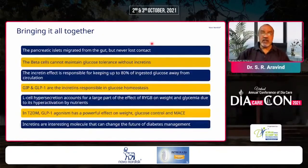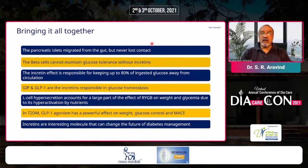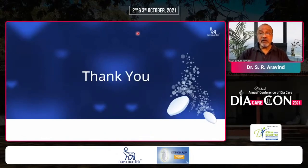In summary: from the pancreatic islets, we moved to the gut — though there were about three decades of less interest between the 1940s and 1970s. GLP-1 and GIP are the incretins responsible for glucose homeostasis. GLP-1 is already in use; much more will be heard about GIP in the future. In type 2 diabetes, the GLP-1 mechanism has powerful effects on weight, glucose control, and cardiovascular outcomes. Incretins are very interesting molecules that can change the future of diabetes management. Thank you very much.